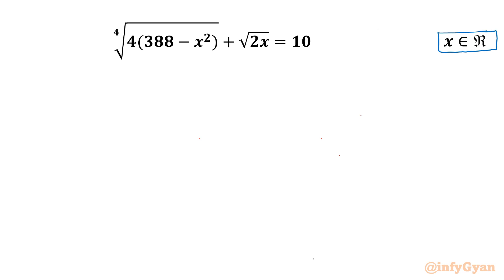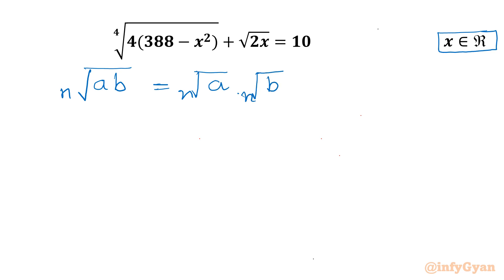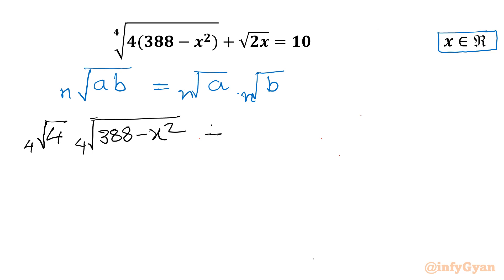Let's get started by writing one powerful property of radicals: the nth root of a times b can be written as the nth root of a multiplied by the nth root of b. I will apply this property to our two terms on the LHS. So I can write the 4th root of 4 times the 4th root of (388 minus x squared), plus the square root of 2 times the square root of x, equal to 10.